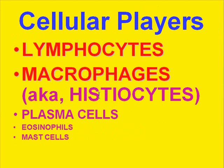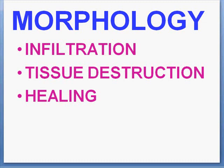Often you'll also see plasma cells, eosinophils, or mast cells as part of the process. But remember, the cellular players in chronic inflammation can be a wide variety of things, with lymphocytes and macrophages being the main ones. In acute inflammation, the cellular player is only one cell — the neutrophil. The morphology of chronic inflammation is similar to acute inflammation, except now we have monos infiltrating tissue and perhaps causing destruction, and perhaps eventually healing, rather than neutrophils.